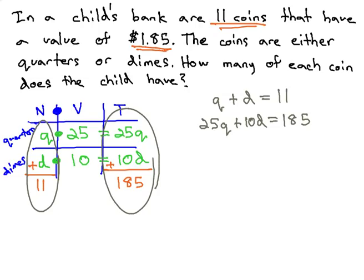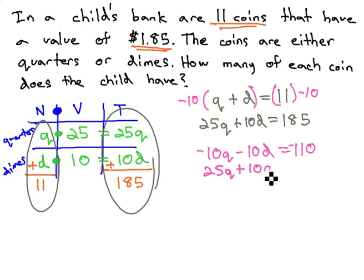We now have an equation we can solve quickly using elimination by addition. Multiply the first equation by negative 10, and that equation becomes -10q - 10d = -110. The second equation is still 25q + 10d = 185, and so when we combine them together, we end up with 15q = 75.